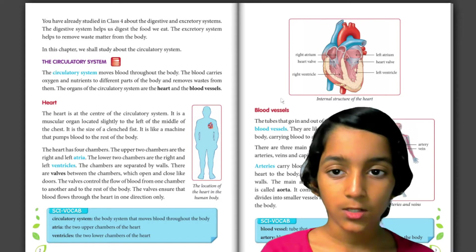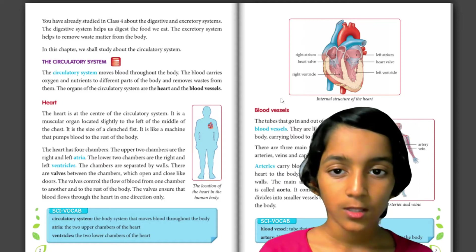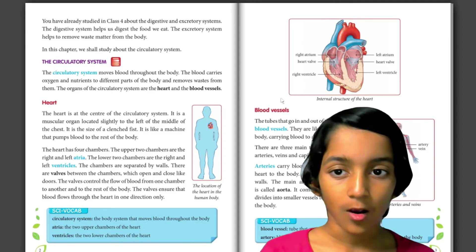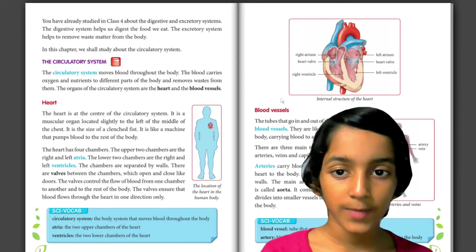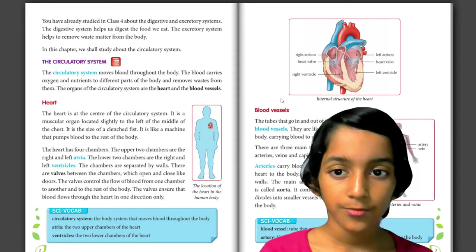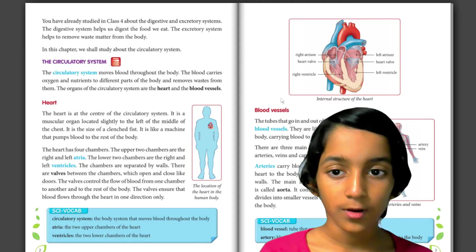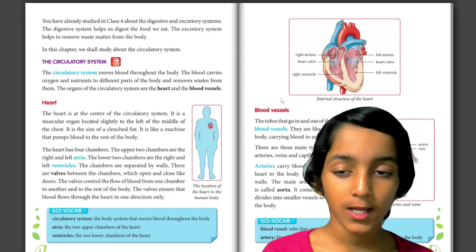The circulatory system moves blood throughout the body. The blood carries oxygen and nutrients to different parts of the body and removes waste from them. The organs of the circulatory system are the heart and the blood vessels.